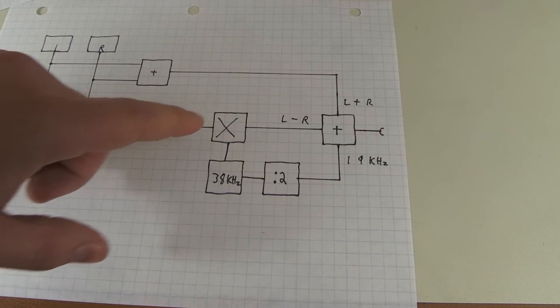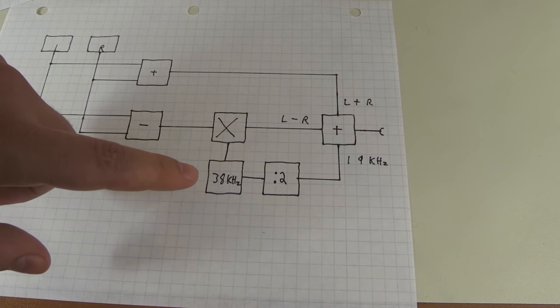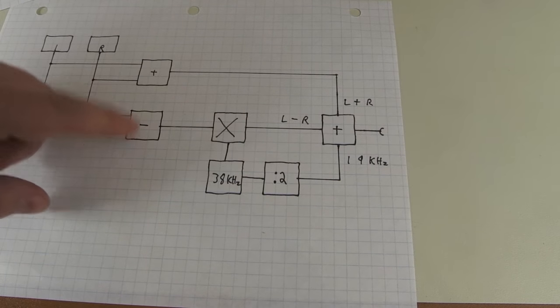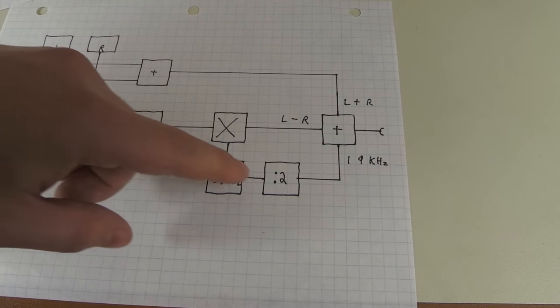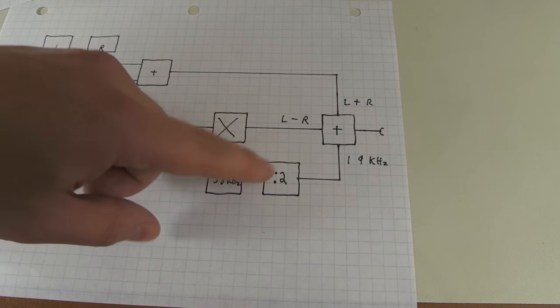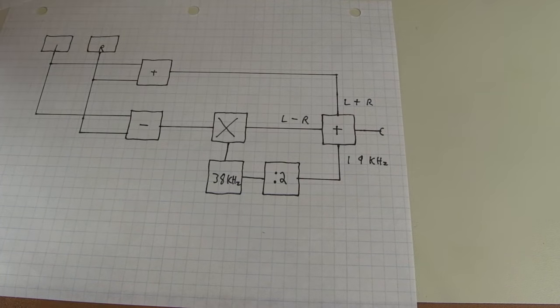our components are left plus right generated by adding the two channels. Left minus right modulated on a 38 kilohertz tone as a double sideband, which is the different signal. And then a pilot tone, which is generated simply by dividing the 38 kilohertz by two, giving us the 19 kilohertz.